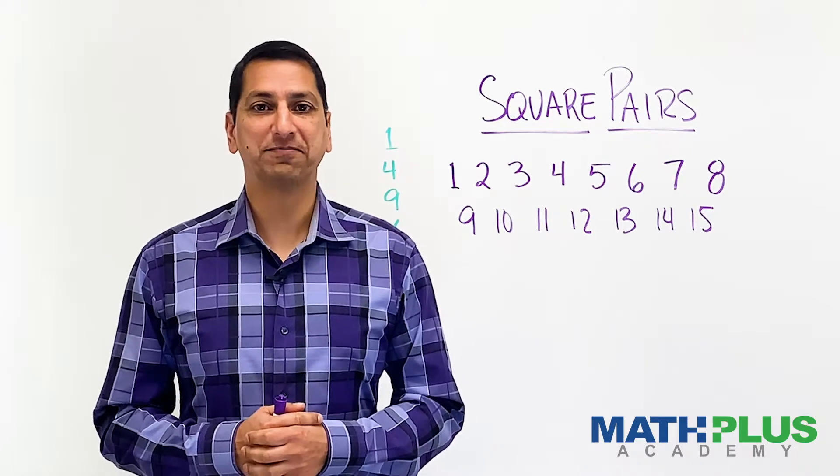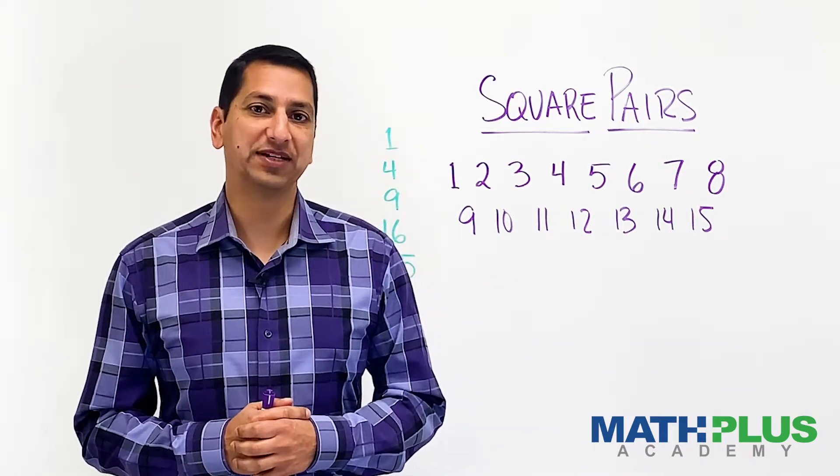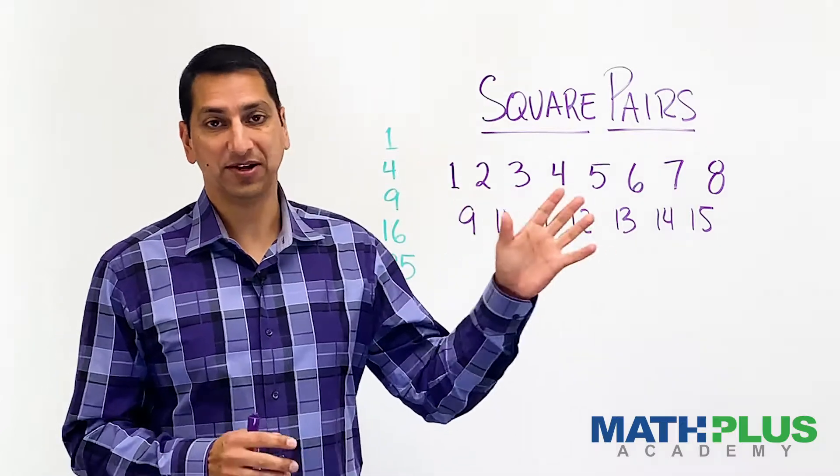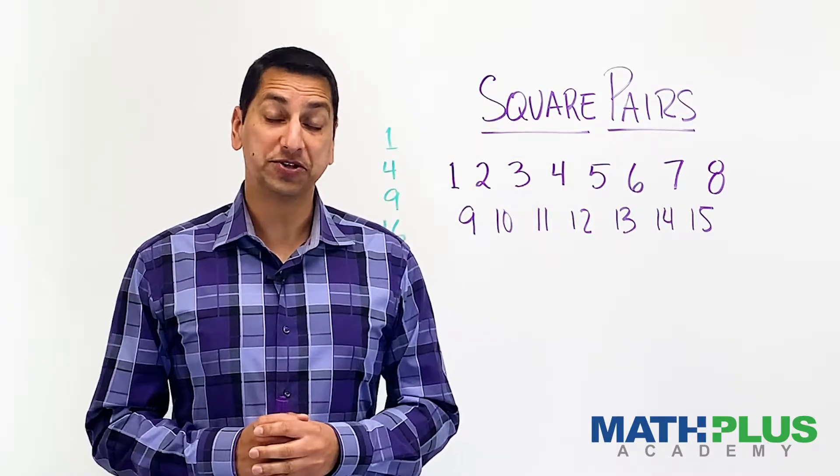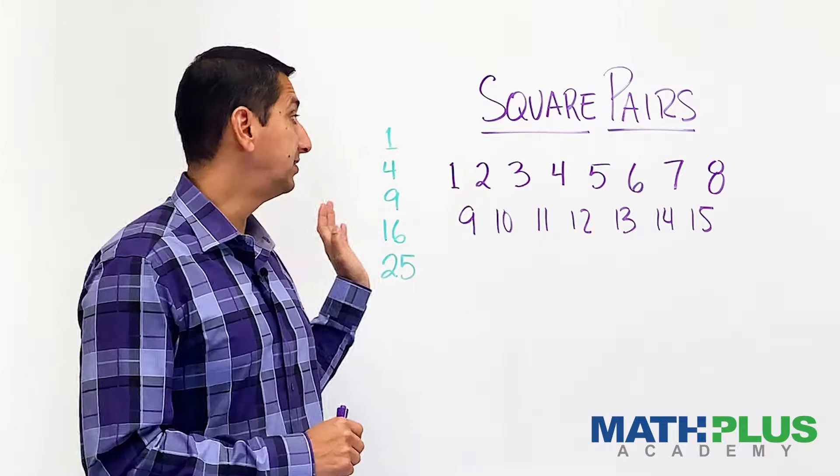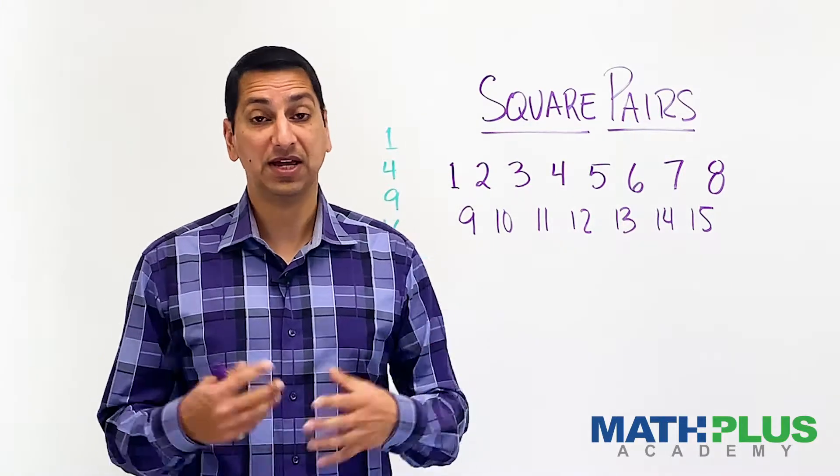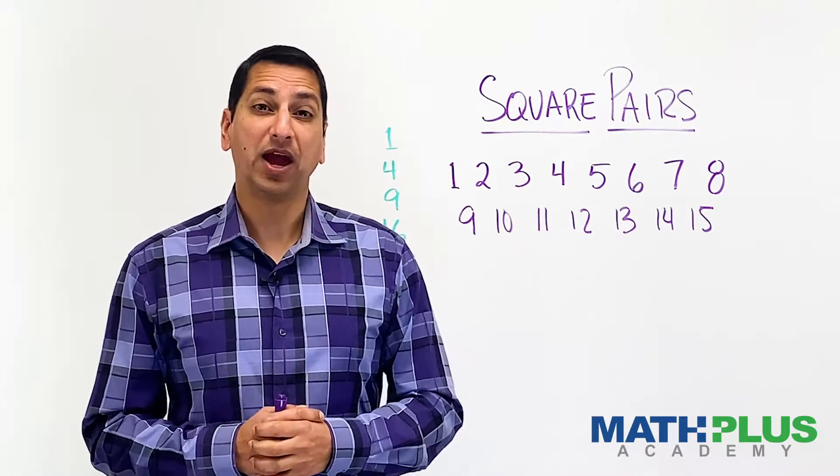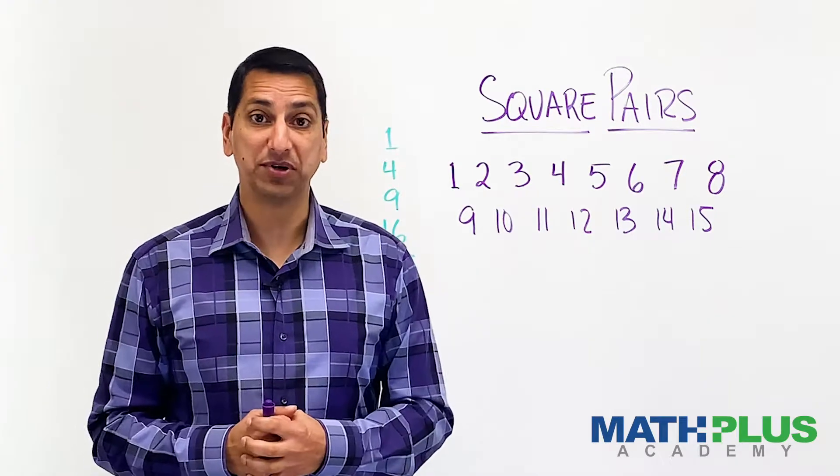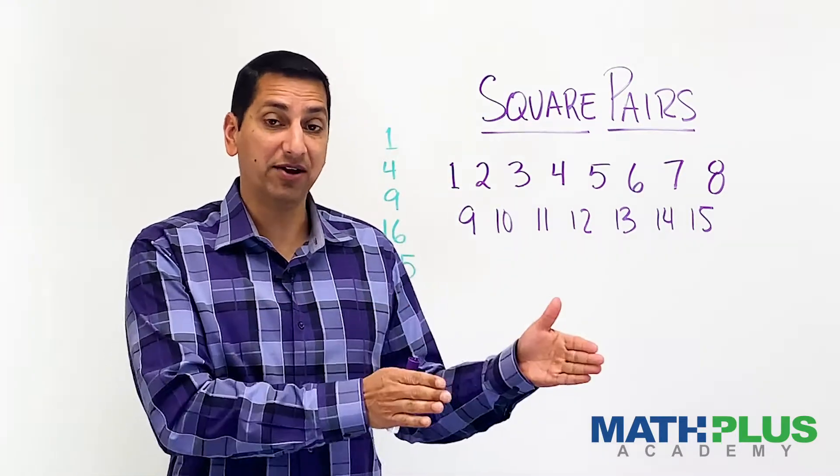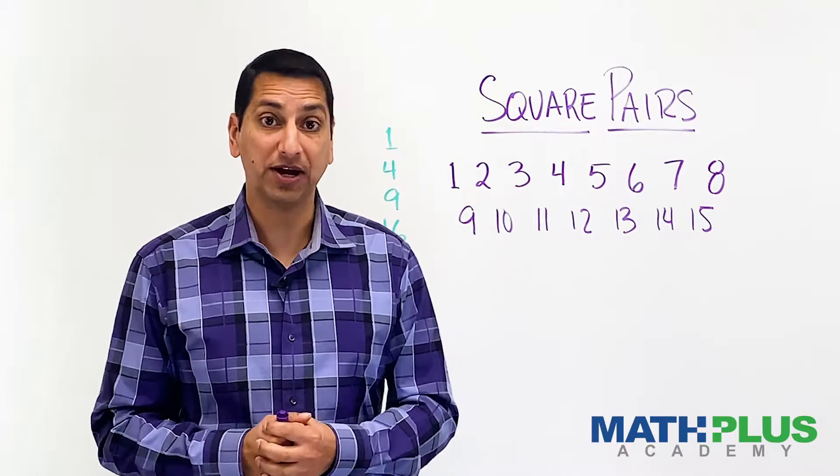Hi, I'm Dr. Rod Shaw of Math Plus Academy, and this math treat is called Square Pairs. What we are going to try to do today is take a sequence of numbers like this. Here I have one through 15, and we're going to try and create a chain of numbers where every pair adds up to a square number.